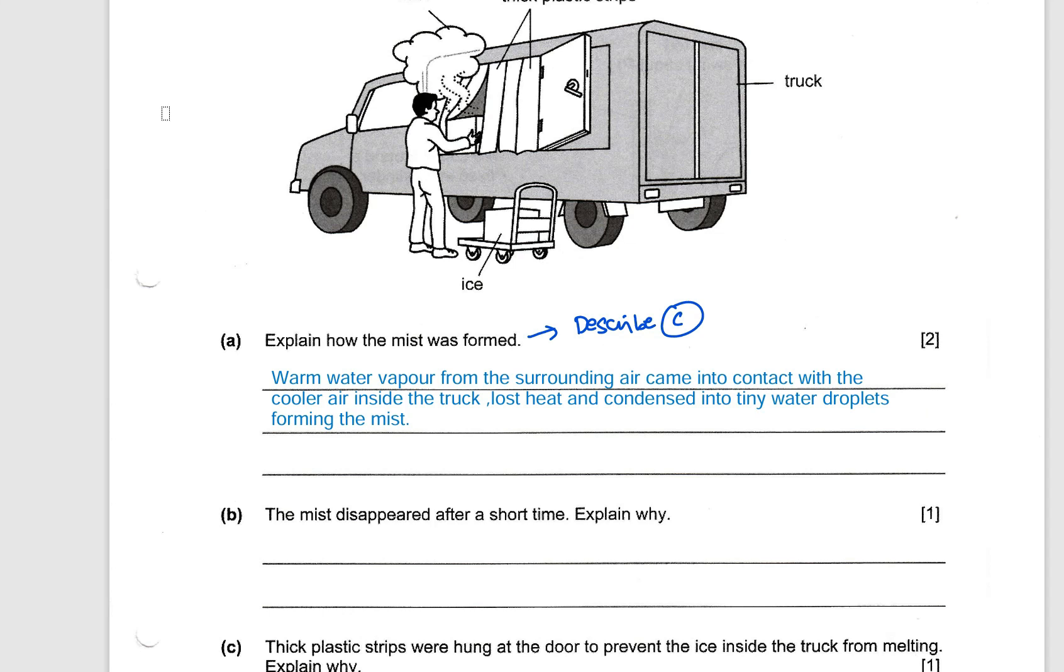There are some keywords you need to remember. Warm water vapor. You cannot say surrounding air condensed. So warm water vapor came into contact with something cooler, which is the air inside the truck. Lost heat and condensed is a buddy word meaning it comes together. Every time you say condensed, you need to say lost heat into water droplets.